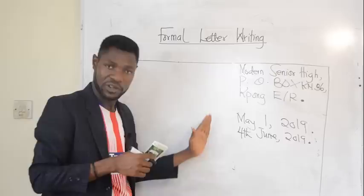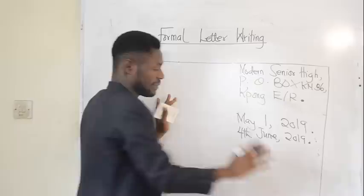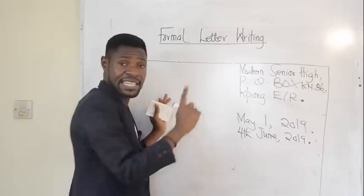If everything is in block, all of them will be in capital letters — block letters. If not, just the initials. And remember: June — all the months of the year are proper nouns and so they should always be capitalized.